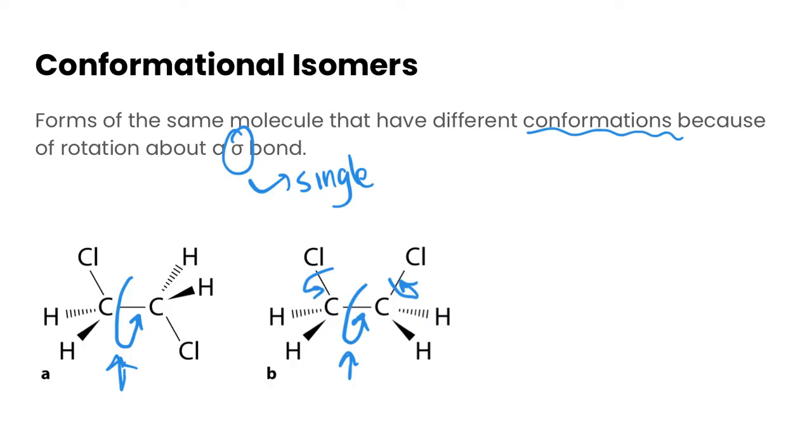So this one in particular here is 1,2-dichloroethane. Many different forms of this are going to exist simultaneously in a sample of this particular substance or any of these substances that have these conformational isomers. These forms are interconverting constantly with each other, and you can't really isolate any one particular form because no bonds need to be broken.